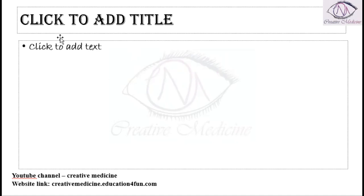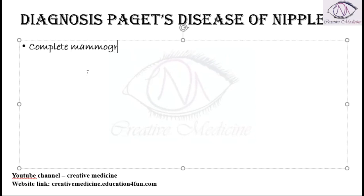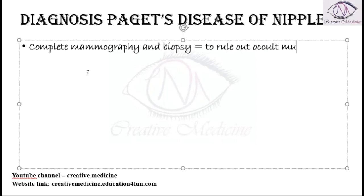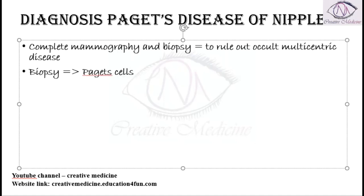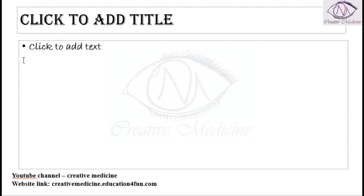For diagnosis of Paget's disease of nipple, complete mammography is done along with biopsy, mainly to rule out occult multicentric disease. On biopsy, Paget's cells are seen — large, round cells with pale staining and a round central nucleus.